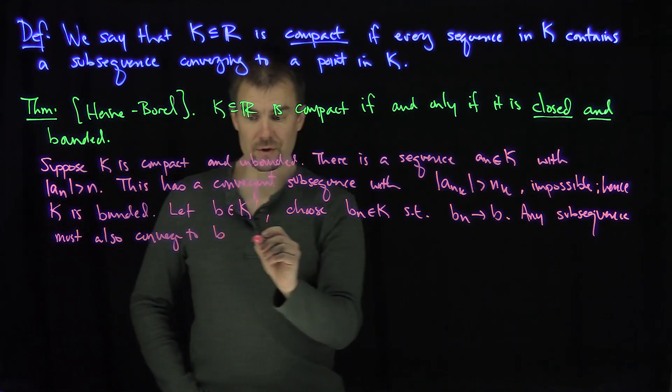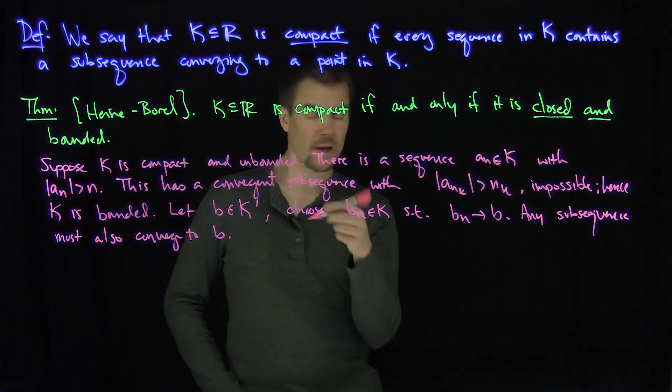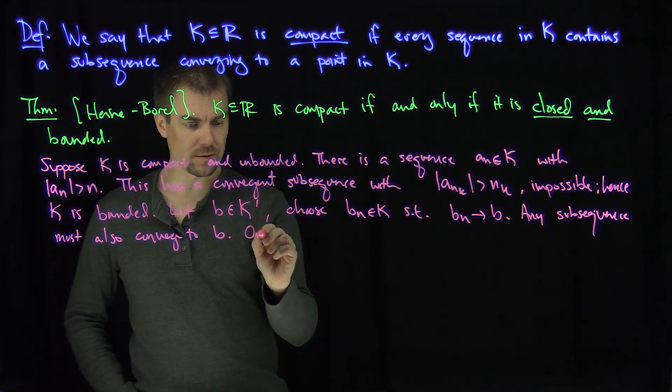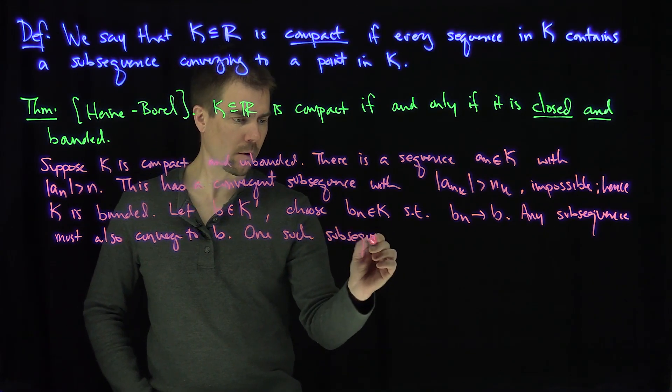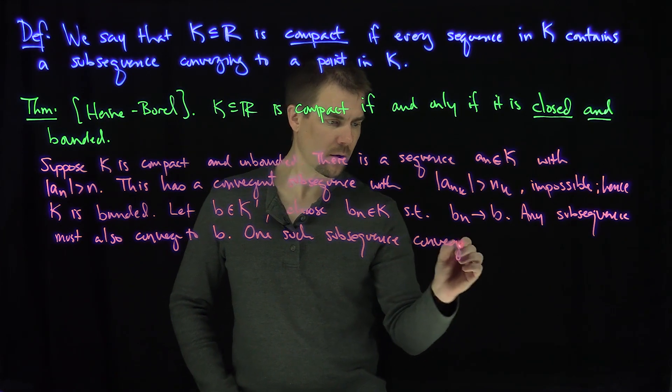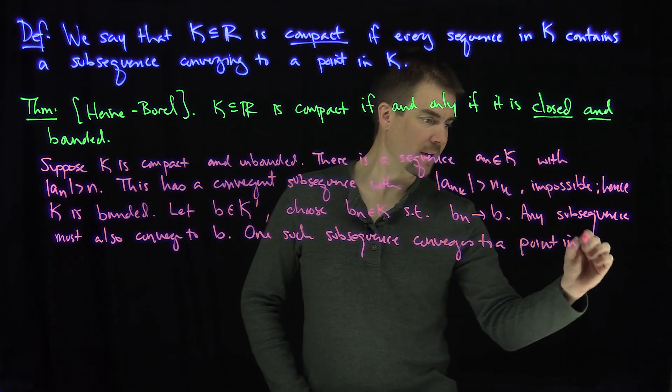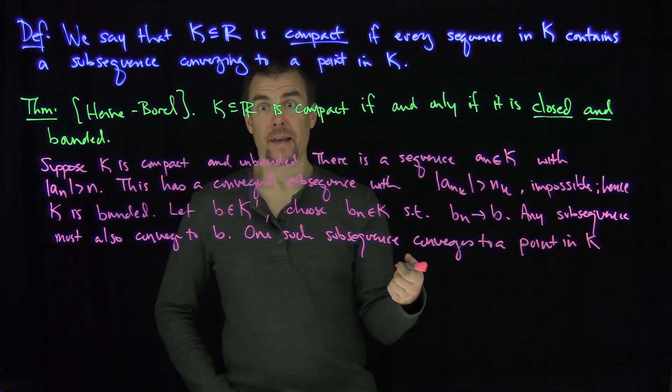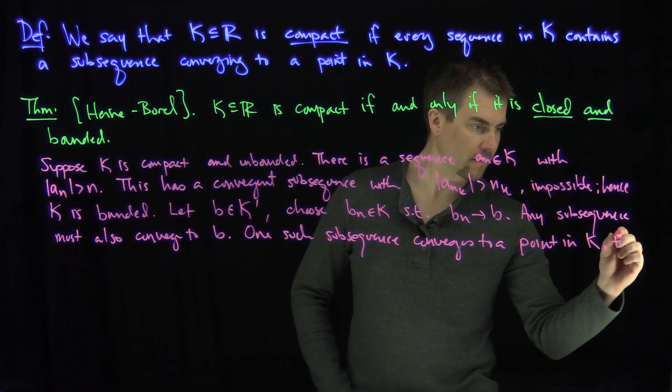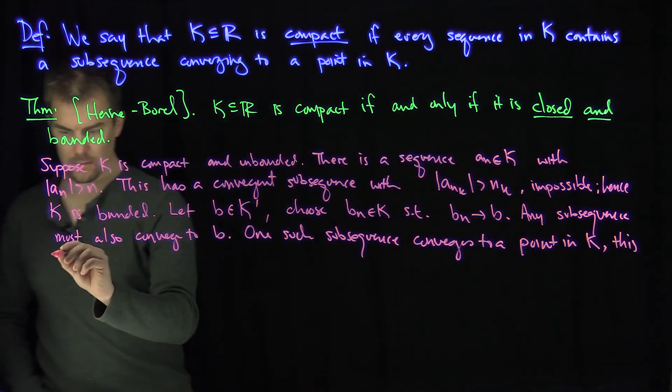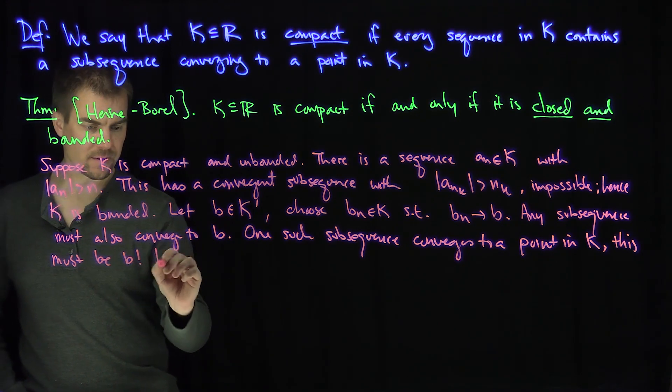But we know by definition of compactness that there is such a subsequence that is going to converge to a point in k. So one such subsequence converges to a point in k. But that point has to be b. This must be b. Hence b's in k.